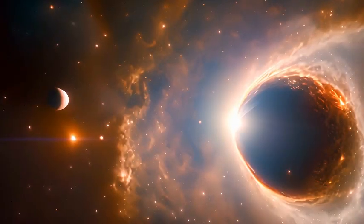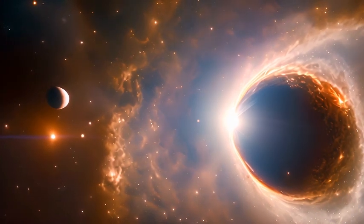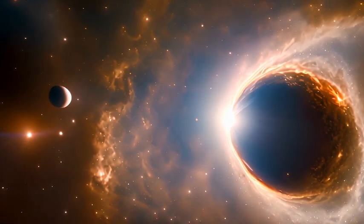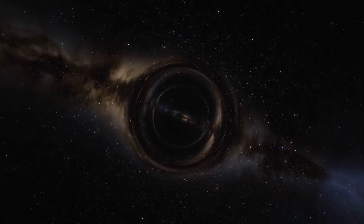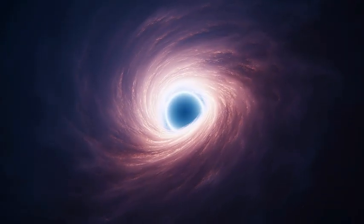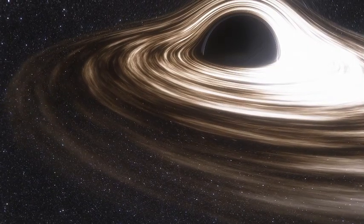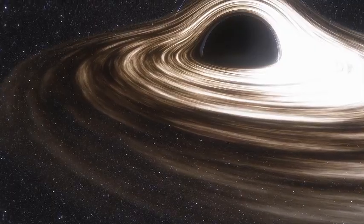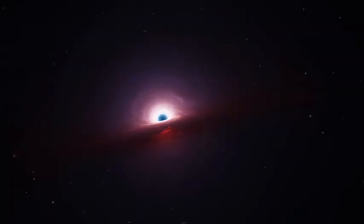But not all black holes are born this way. Some formed in the early universe, long before the first stars had time to live and die. These are the so-called direct-collapse black holes. Instead of forming from stars, they came from enormous clouds of hydrogen gas that collapsed directly under their own gravity. These ancient monsters may have been the seeds of today's supermassive black holes, the behemoths sitting at the centers of galaxies, millions or even billions of times more massive than our sun.